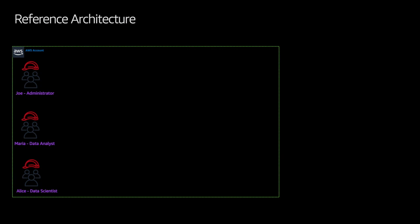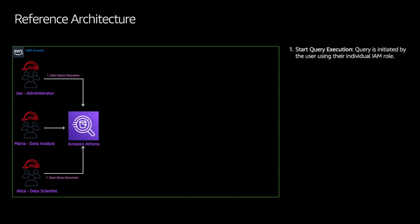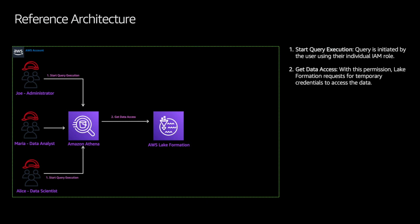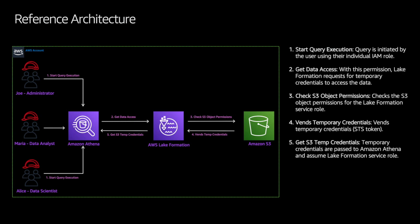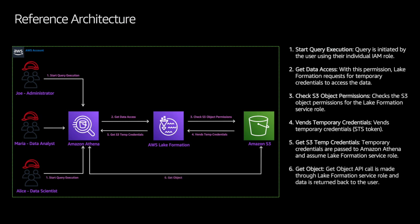This is a sample reference architecture. We have three different users here: Joe, who is an administrator; Maria, who is a data analyst; and Alice, who is a data scientist. All three initiate a user query from Amazon Athena through their individual IAM roles. Using the get data access permissions, AWS Lake Formation requests temporary credentials to access the data. Then it checks whether the AWS Lake Formation service role has access to the data. Based on the access, it gets a temporary token, which is passed back to Amazon Athena, which assumes the Lake Formation service role. Finally, an S3 GetObject API call is made through this Lake Formation service role and the data is returned back to the user.